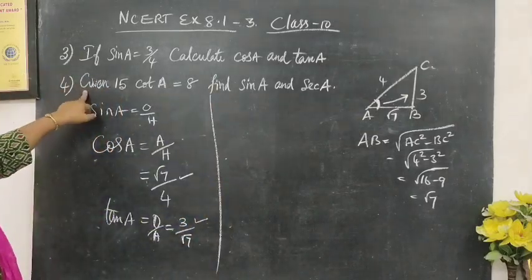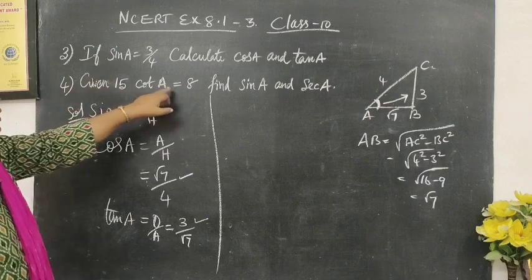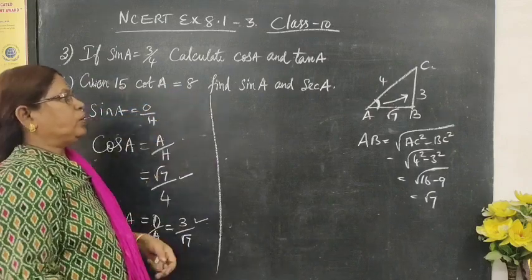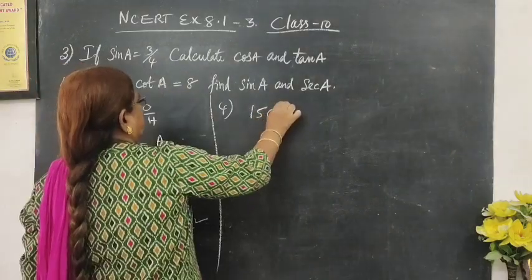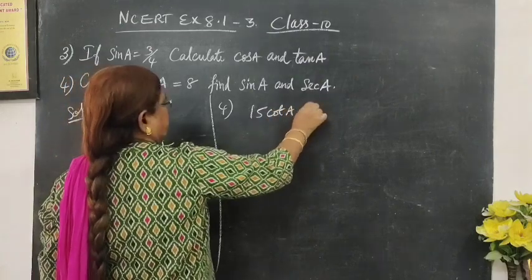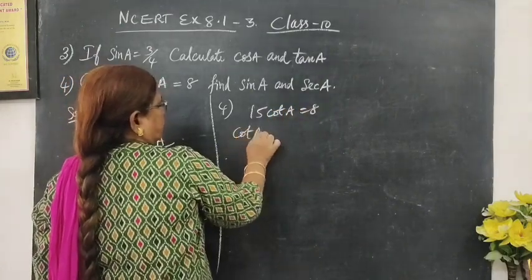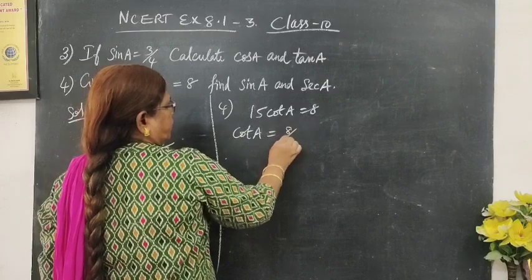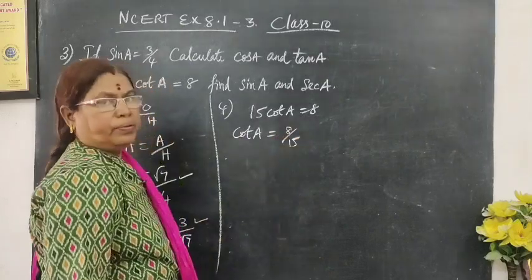Now, question number 4. Given 15 cot A equal to 8, find sin A and sec A. For this cot A equal to 8 by 15.